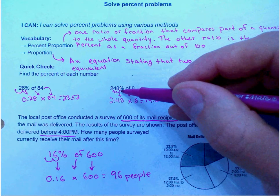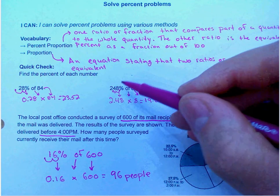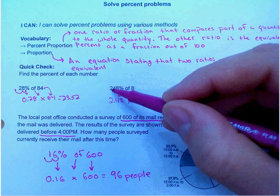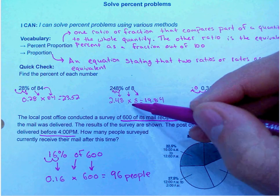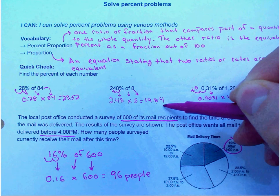Here I have 248 percent of 8. Decimal point goes here and move it two places to the left. We have 2.48 times 8, which is 19.84.